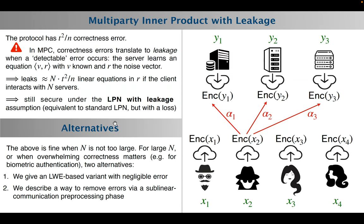This solution has some leakage because there is an error. When you use this in a multiparty setting, this error translates into some leakage of information about the noise that, for example, the servers could obtain. If you want to remove the leakage, we describe two variants. One is based on LWE, which achieves negligible errors directly at the cost of larger communication. We also describe a very nice way to do preprocessing to remove the errors.